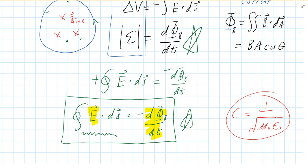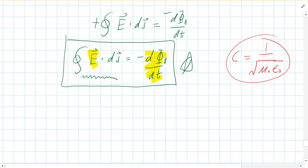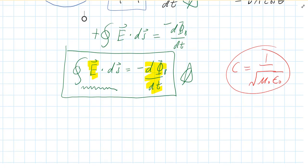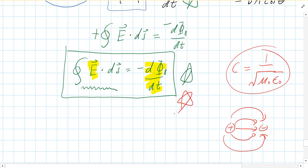Something important about this version of Faraday's law: in no other case have we had electric fields go in circles. They've always gone in or out of things — like between a positive and negative charge, the field doesn't circulate, it has a start and an end point. But now we have an electric field that actually does circulate. You get a circulating electric field if you change a magnetic flux in a region.